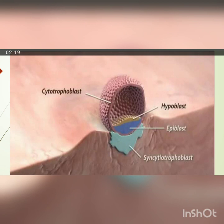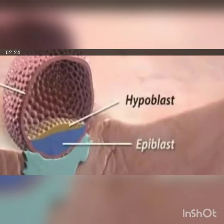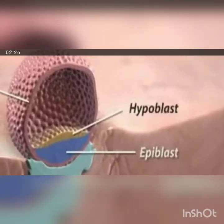By the end of the first week, a layer of cuboidal cells known as hypoblasts is formed, and the first week of development ends here.